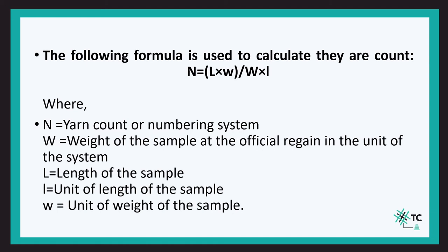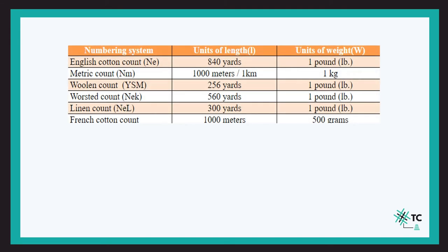Now let us look at the formula for indirect count. The formula has a similar logic to the direct counting system. The count equals the length of the sample multiplied by the unit weight of the sample — which was one pound in our example — divided by the weight of the sample multiplied by the unit length of the sample.